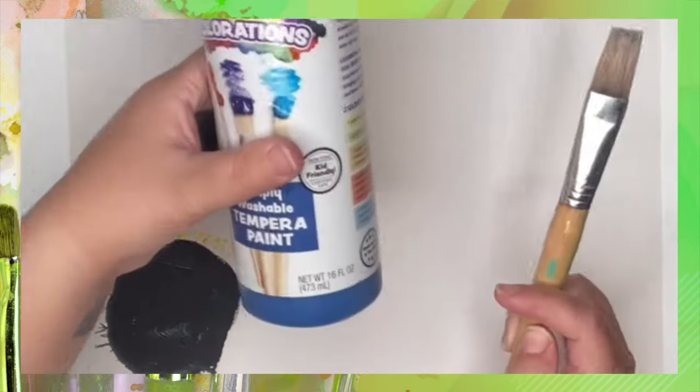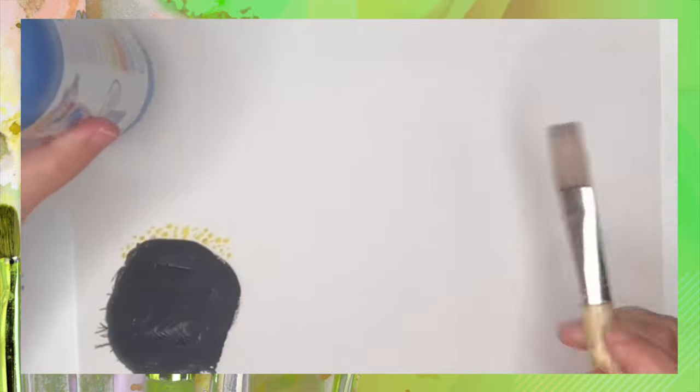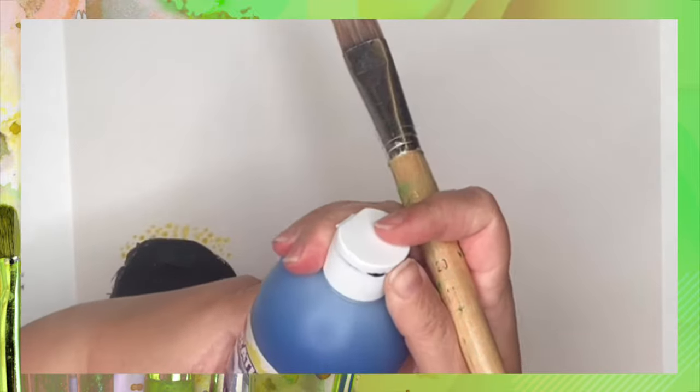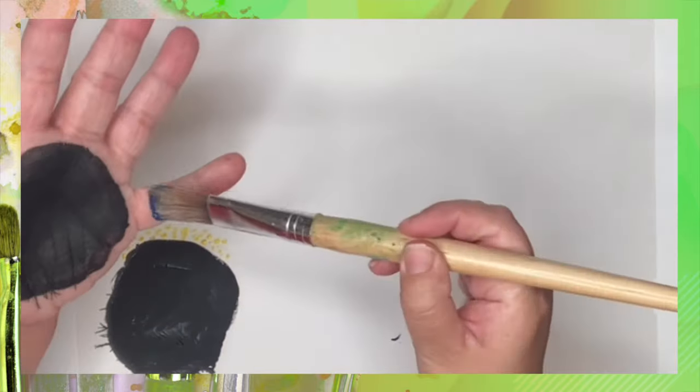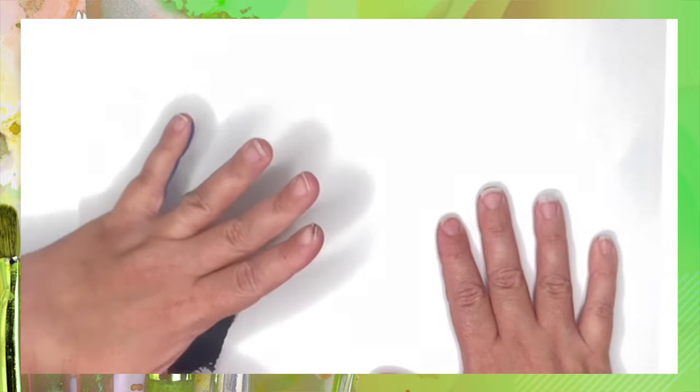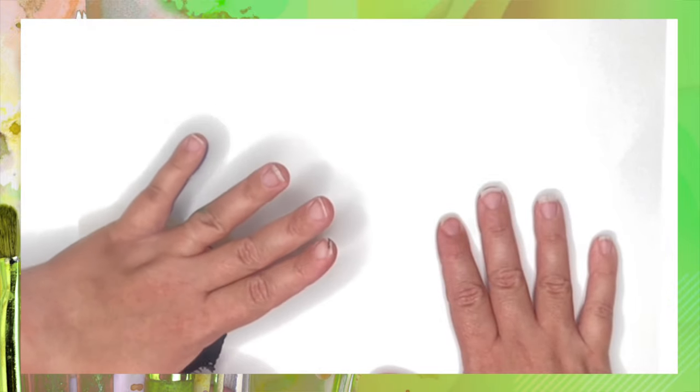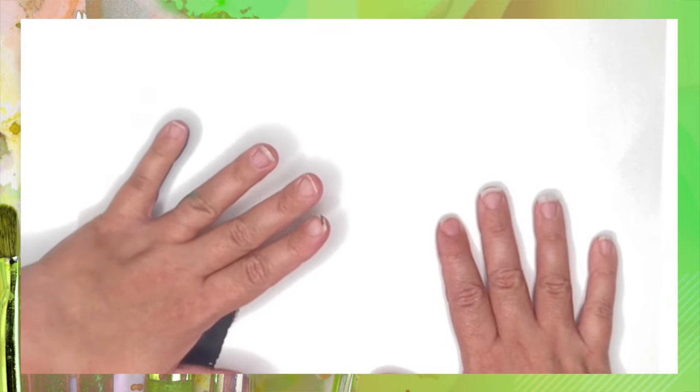So now we're going to grab our blue paint and the paintbrush and we're going to paint our pinky so that we can start the rainbow. And next we're going to press it down just like this.